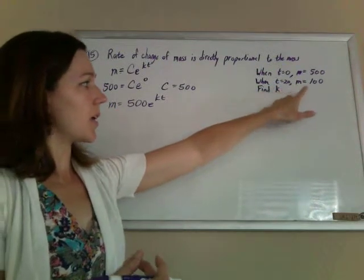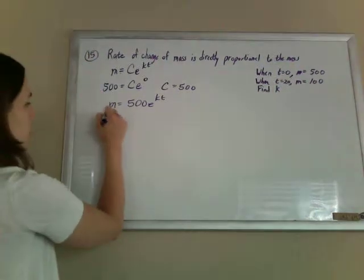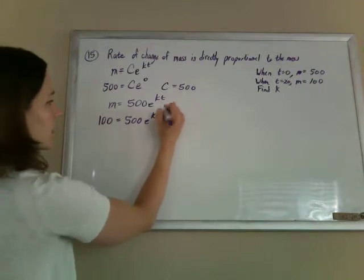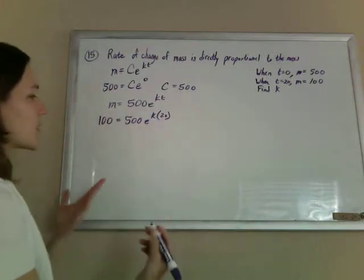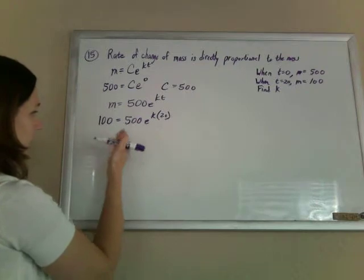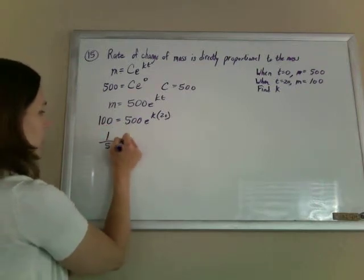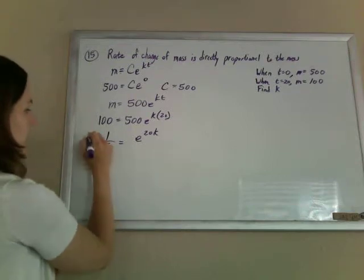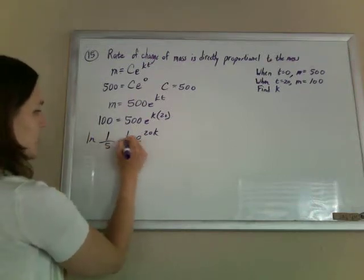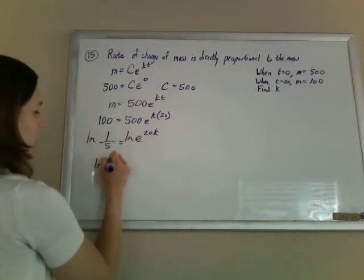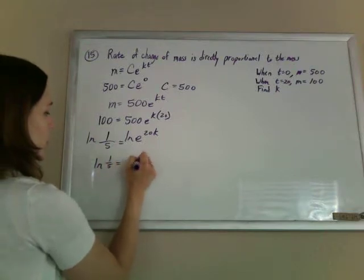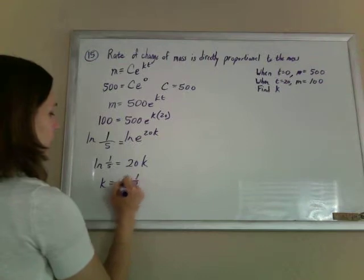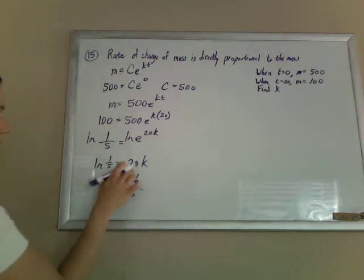And one more piece of information to help us solve for k. I know when t is 20, m is 100. So m is 100 when t is 20. Now we just solve this. So get the e alone by dividing both sides by 500. So 1 fifth equals e to the 20k. Take a natural log of both sides to knock this guy out. So the ln of 1 fifth should equal 20k. So k should equal the ln of 1 fifth divided by 20.